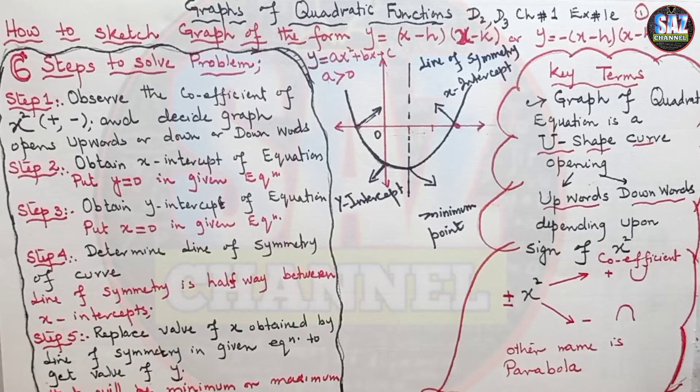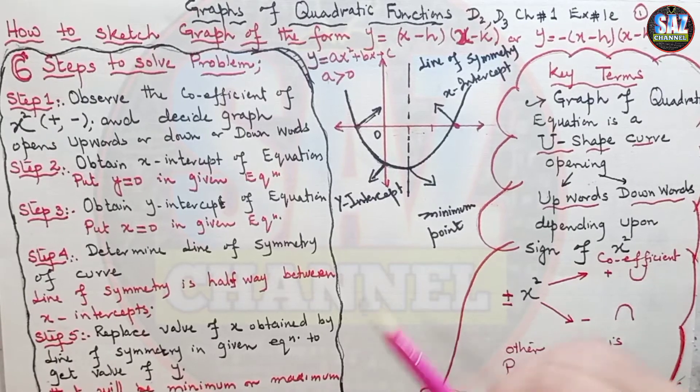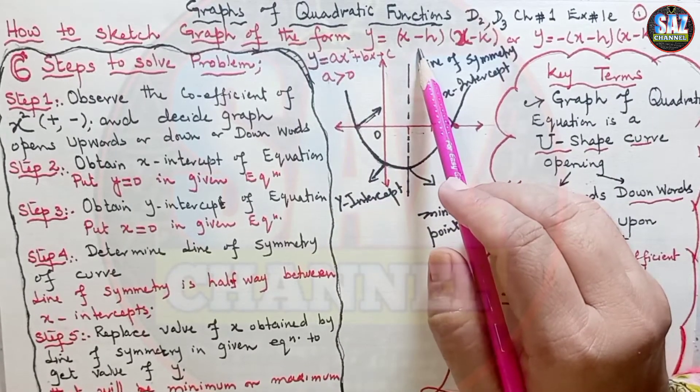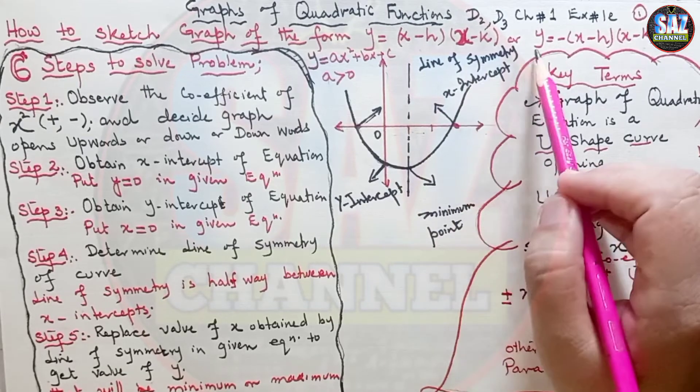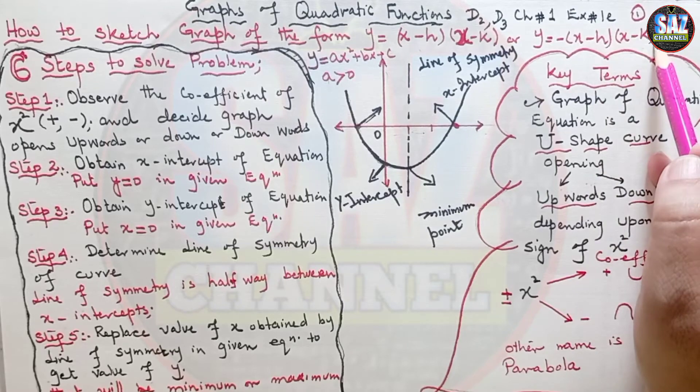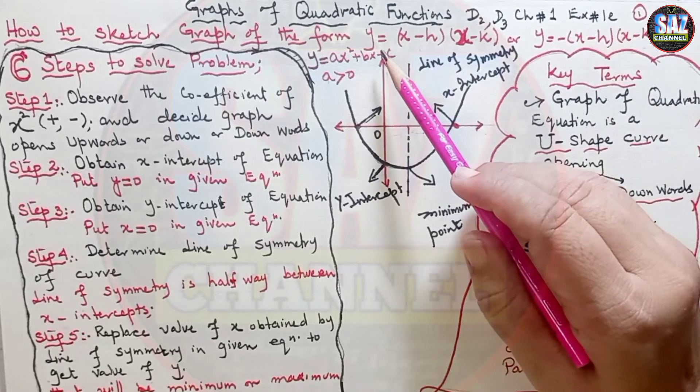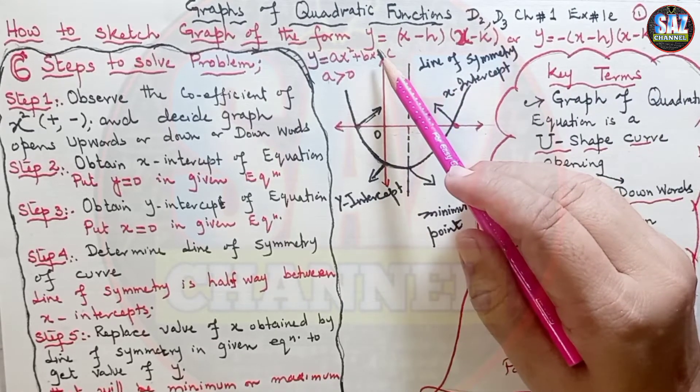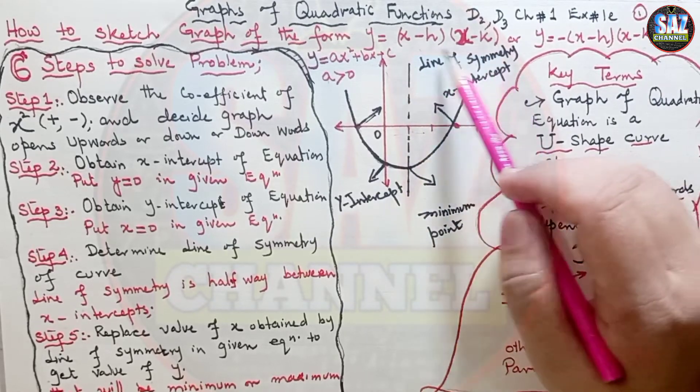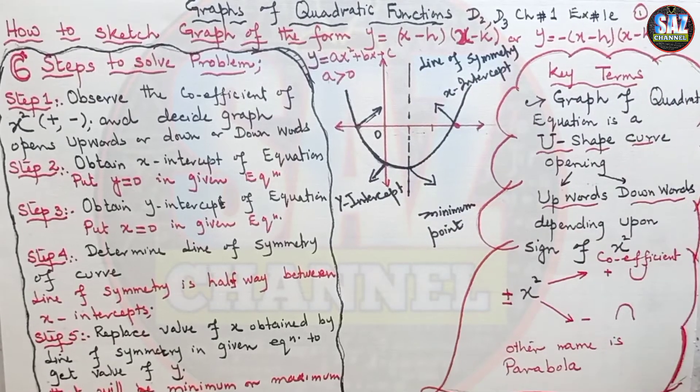Students in this class will be learning how to sketch the graph of equations of the form y equals (x minus h)(x minus k) or y equals minus (x minus h)(x minus k). We can see that under this condition, the equations can be easily factorized by hit and trial method or mid-term breakage method.